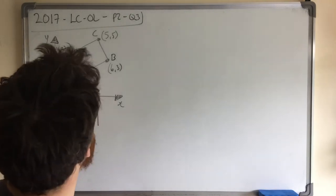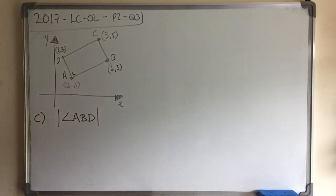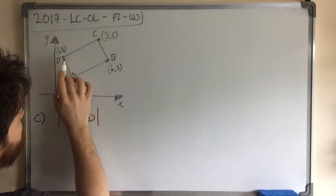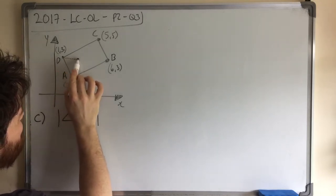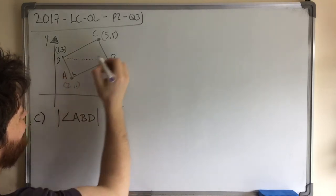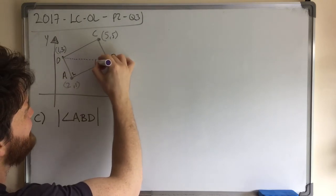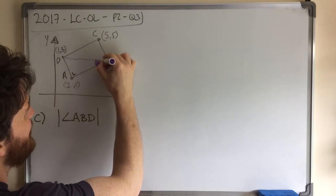Angle ABD. So first off, we need to correctly label angle ABD. So what you have to do is you have to take this shape and they're looking for this angle in here. So how did I figure that out?